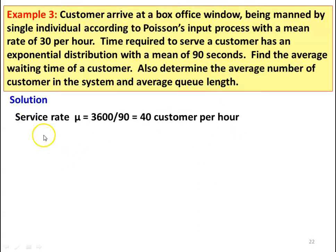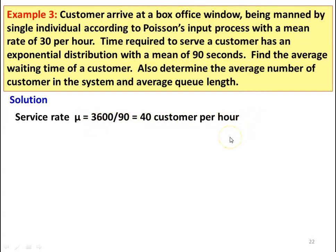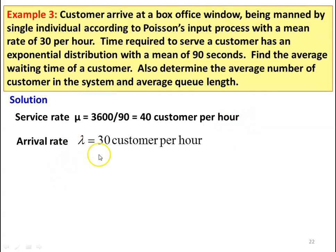The service rate mu equals 3600 divided by 90, which equals 40 customers per hour. For every customer, service takes 90 seconds, so 3600 divided by 90 equals 40 customers per hour. We can serve 40 customers per hour and the arrival rate lambda equals 30 customers per hour. Both lambda and mu are expressed in terms of per hour rate.